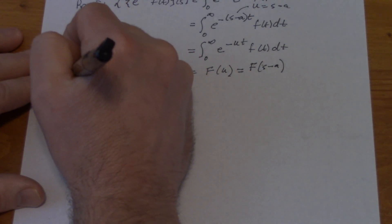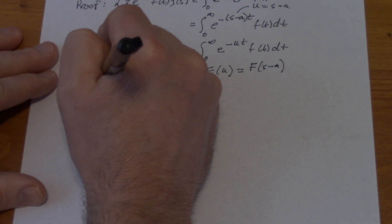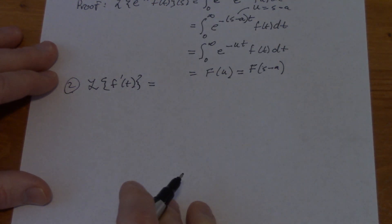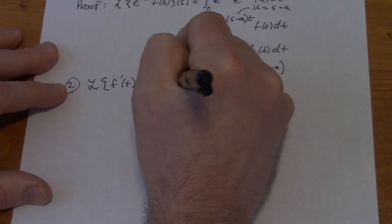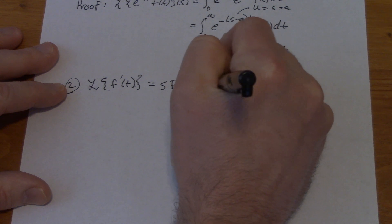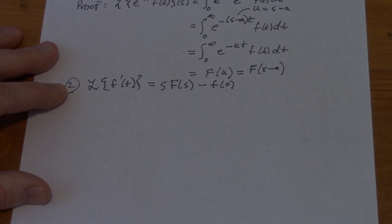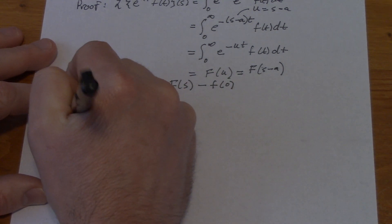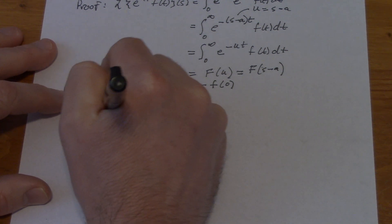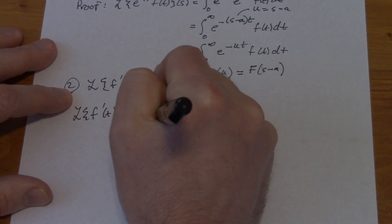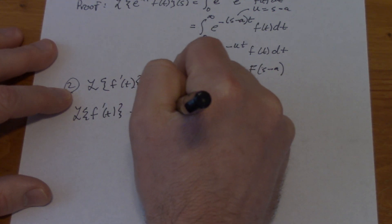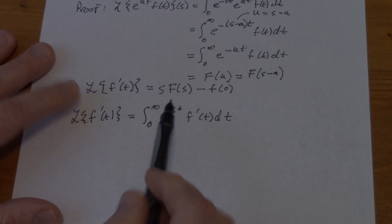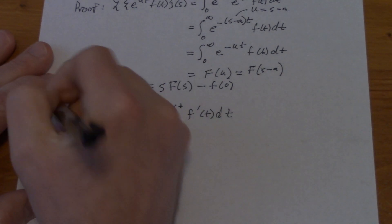The second property is a little bit more involved. The Laplace transform of f prime of t — what's that going to be? This is s times capital F of s minus little f of zero. So how do we go about proving that? The Laplace transform of f prime of t is the integral from zero to infinity of e to the minus st times f prime of t.